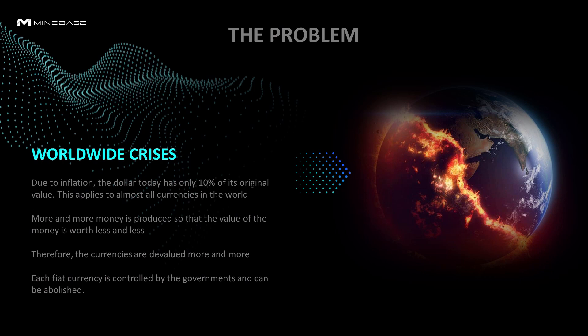The problem is our worldwide crisis. Due to inflation, the dollar is today only 10% of its original value. This applies to almost all fiat currencies worldwide. More and more money is produced so that the value of money is worth less and less. Therefore currencies are devalued more and more. Each fiat currency is controlled by the government and can be abolished.